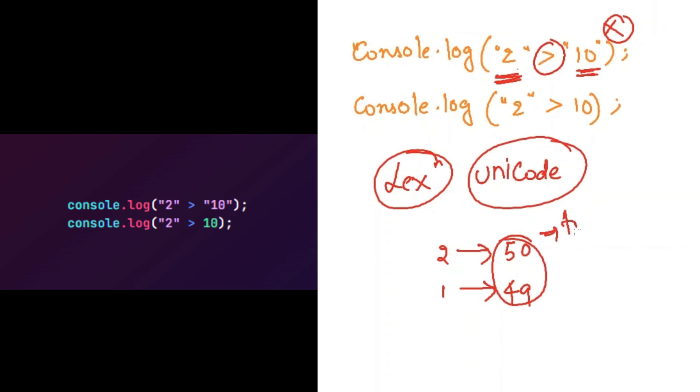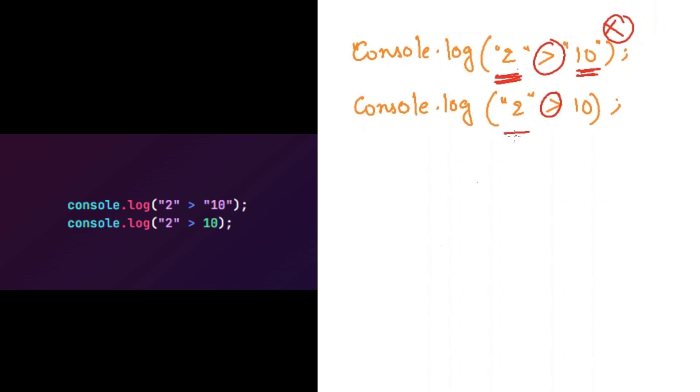In the second line, we are using a comparison operator between a string and a number. So JavaScript engine will convert this string into the number 2. So our expression will become 2 is greater than 10, which will return false.